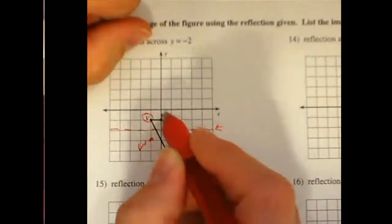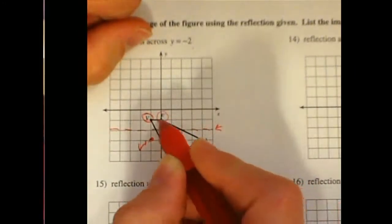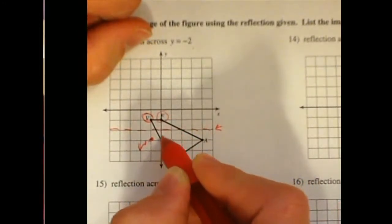I am going to do the same thing with f here. It is 1 above and I am going to go directly straight down to 1 below. That is f prime.